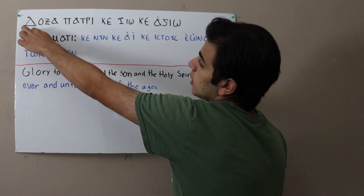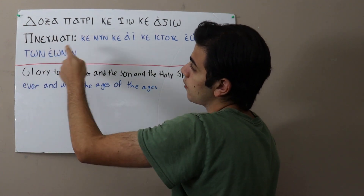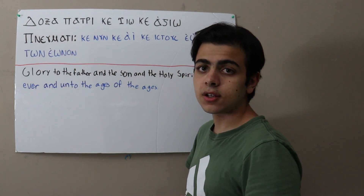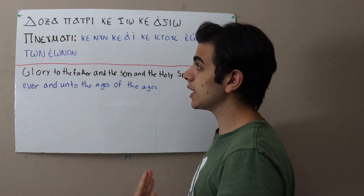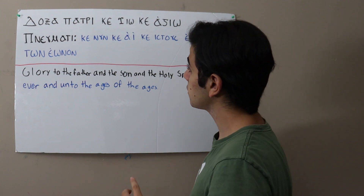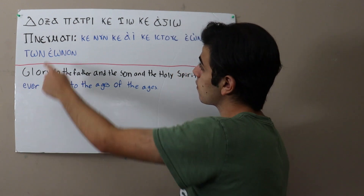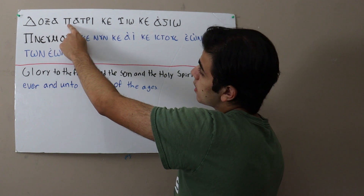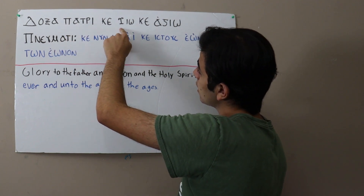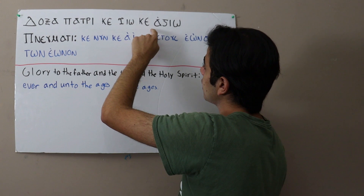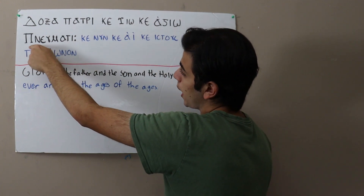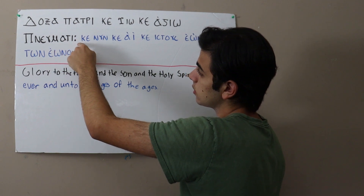So this first word is dhoksa. Remember, this letter here — the delta — it's commonly thought to be a D sound, but it's more of a TH type of sound. So then we have boksha, petri, ke, eiyo, ke, agiyo, et nevmati.